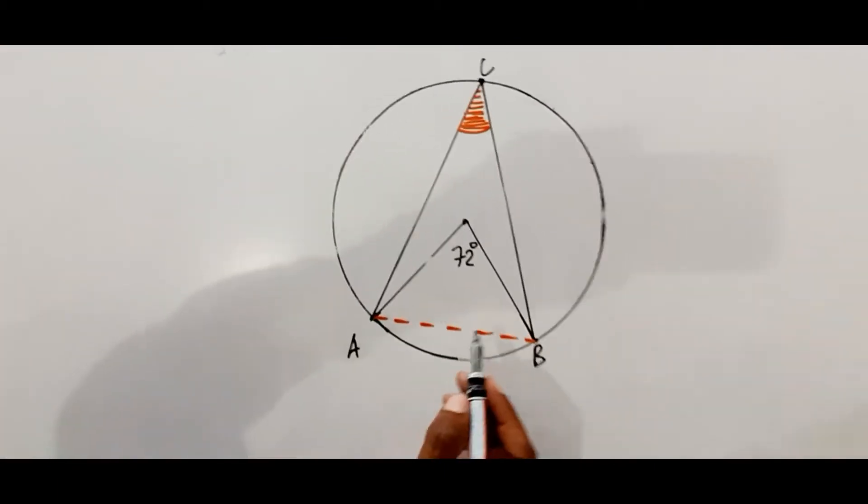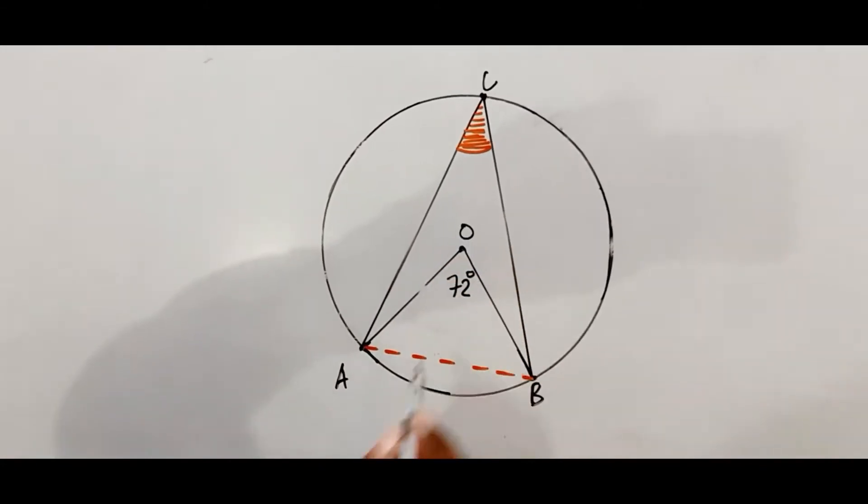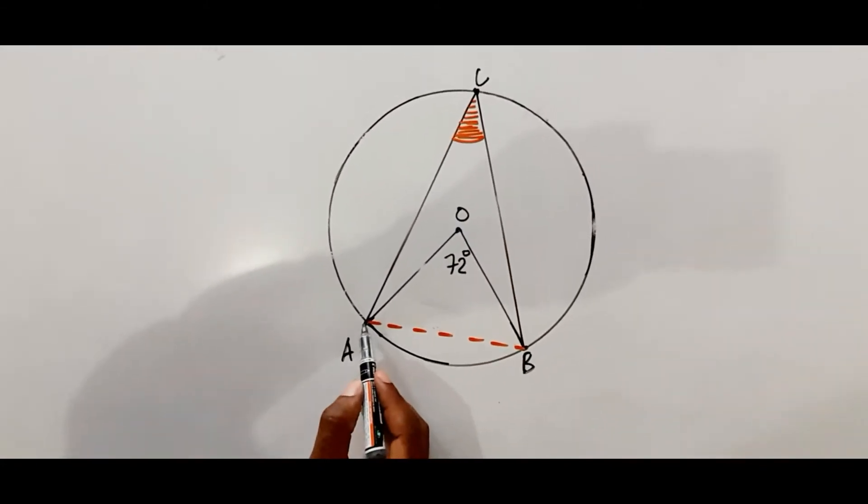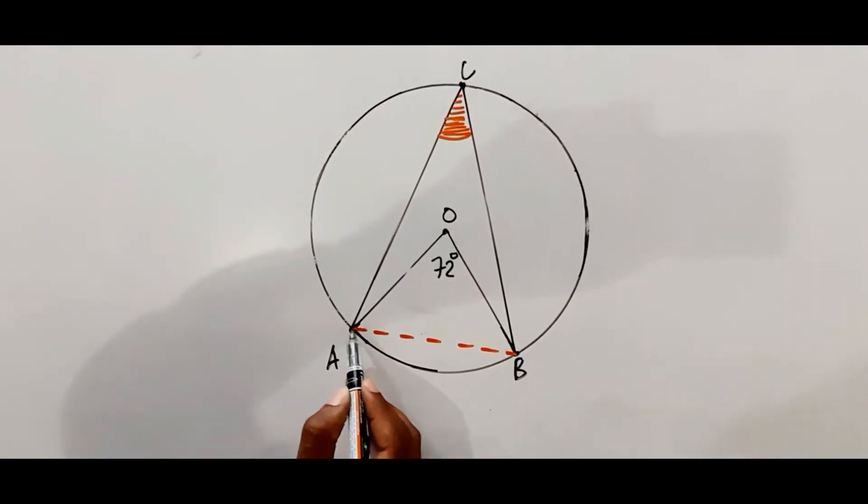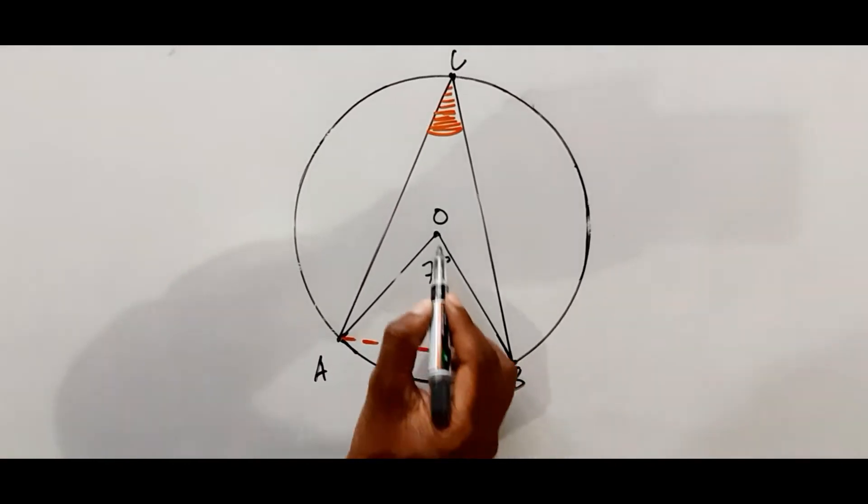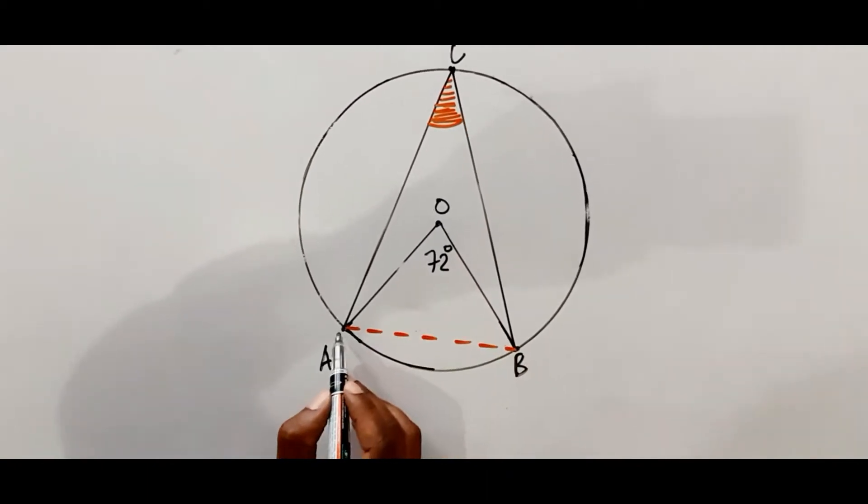An angle subtended at the center - so this could be our center - meaning that this arc AB is subtending 72, or we can say chord AB is subtending 72 degrees at the center.